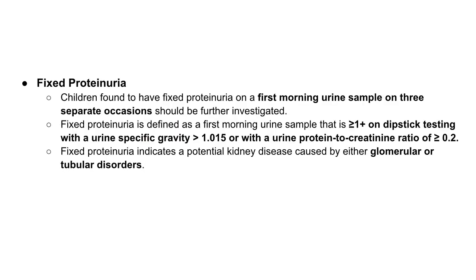Any child with proteinuria of more than or equal to 1 plus protein on dipstick testing with a urine specific gravity of more than 1.015, or with a urine protein-to-creatinine ratio of more than or equal to 0.2 on a first morning urine sample on three separate occasions, should be investigated further and is called fixed proteinuria. This indicates a potential kidney disease caused by either glomerular or tubular disorders.